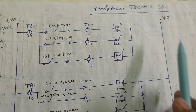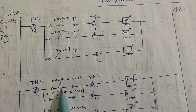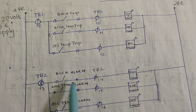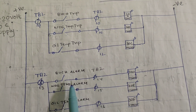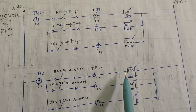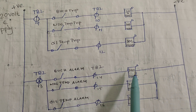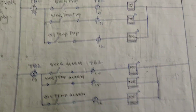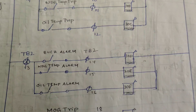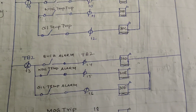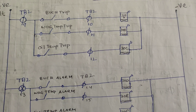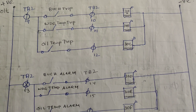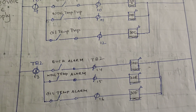We provide 220V DC to the circuit — positive terminal on one side, negative on the other. When the contact changes from NO to NC, positive voltage flows through the circuit and the flag relay operates. The flag drops down and cannot be reset, so the Buchholz alarm is indicated. You must go to the transformer and supervise it.